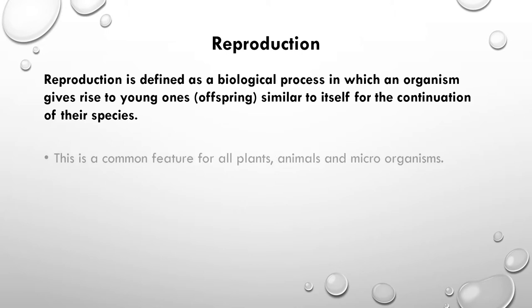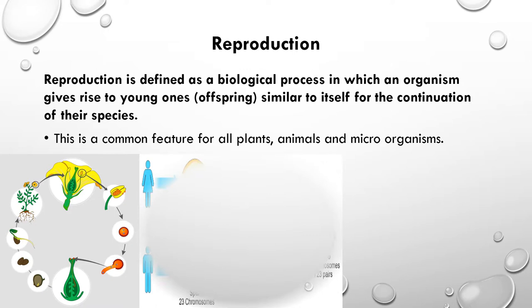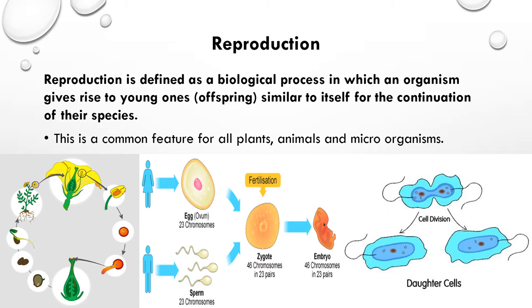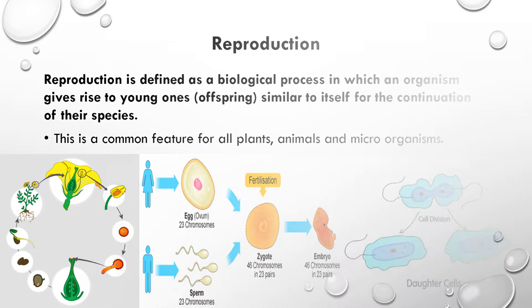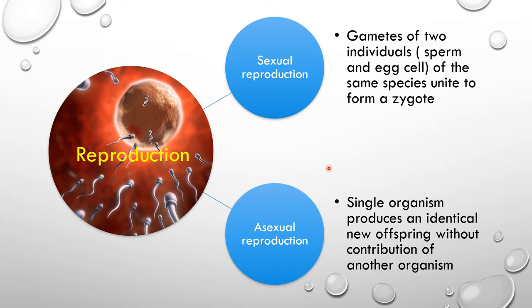Reproduction is a common characteristic that you can observe in all plants, animals, and microorganisms. It helps the continuity of life on Earth. If we consider the process of reproduction, it is of two main types: sexual reproduction and asexual reproduction. When considering sexual reproduction, there should be two individuals of the same species to produce new offspring.